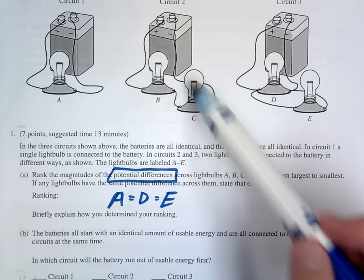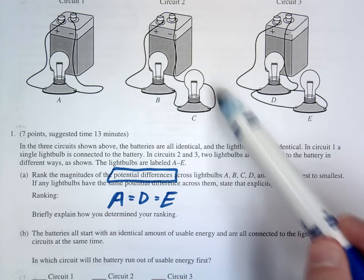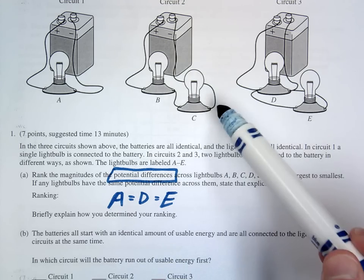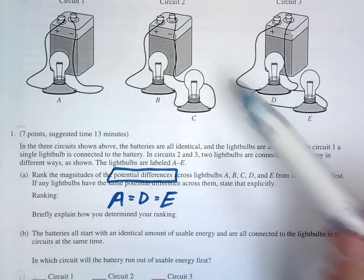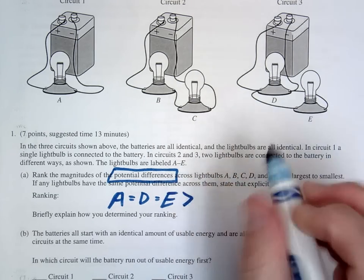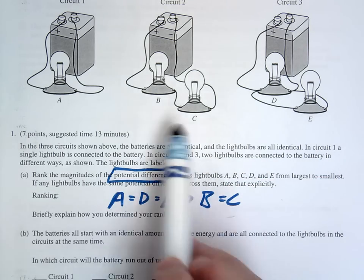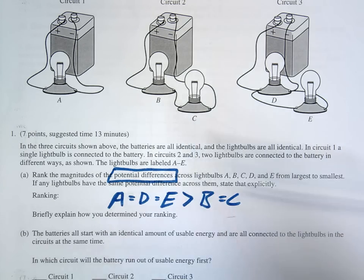Now let's just compare the series circuit. In the series circuit they essentially are going to have to divide up the voltage, split it up here, and so because of that they would get half of the voltage. So they would be less than A, D, and E. And these two would also be equal because since they're the same resistance they would divide up the voltage equally.